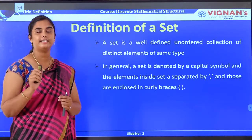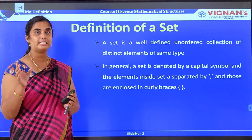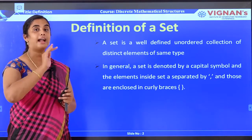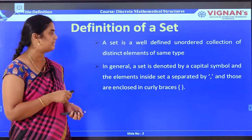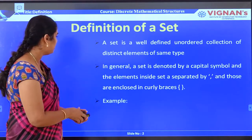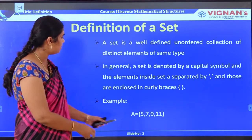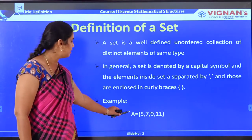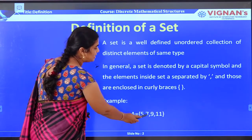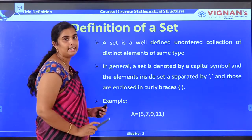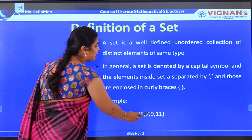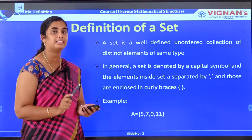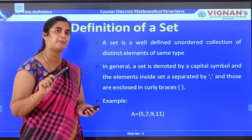In general, a set is denoted by a capital letter and the elements inside the set are separated by commas and enclosed by curly braces. For example, A = {5, 7, 9, 11} — here A is the set, 5, 7, 9, 11 are the elements, separated by commas and enclosed by curly braces. This is one of the ways of representing a set; there are many other ways.